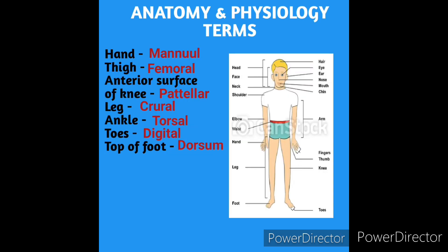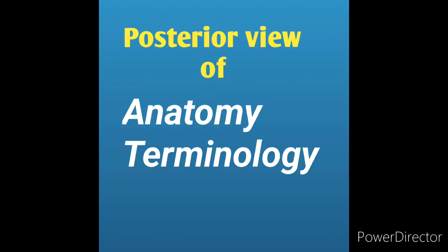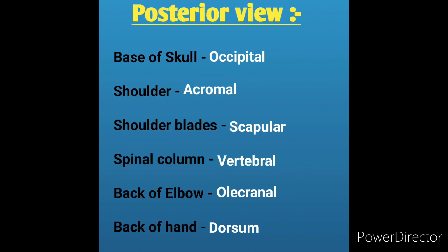The terminology of anatomy and physiology: hand: manual. Thigh: femoral. Anterior surface of knee: patellar. Leg: crural. Ankle: tarsal. Toes: digital. Top of foot: dorsum. Now moving on to the posterior view of anatomical terminology.